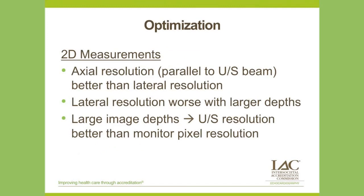There are several technical factors crucial when performing measurements in a pediatric echo. First, axial measurements, which are parallel to the ultrasound beam, are always better than lateral measurements because resolution along the axial direction is better. Second, lateral resolution becomes worse with increasing distance from the probe because of beam spread, so all efforts should be made to perform measurements from views as close as possible to the structure being measured. Third, at large image depths, the ultrasound resolution exceeds the pixel resolution of the image display, so decreasing the image depth to the minimum needed and using image magnification are always recommended.